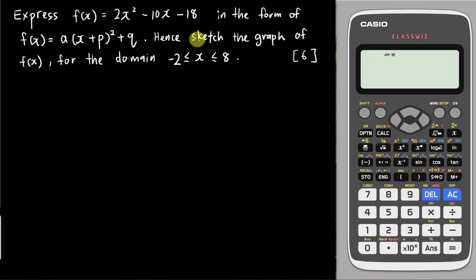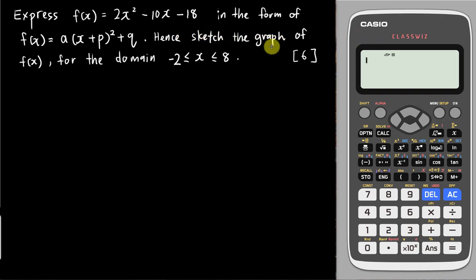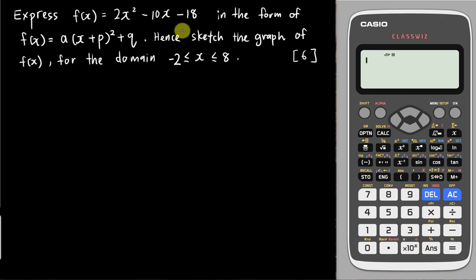Hi, this is a second video sponsored by Casio Malaysia. In this video I will teach you how to use the new Casio 570EX to solve quadratic equation questions. The question asks you to express f(x) = 2x² - 10x - 18 in the form f(x) = a(x + p)² + q.